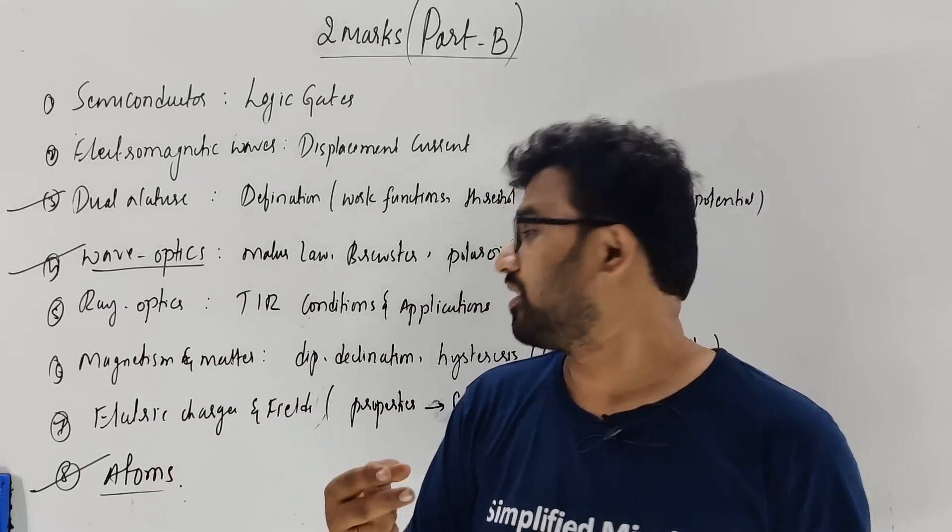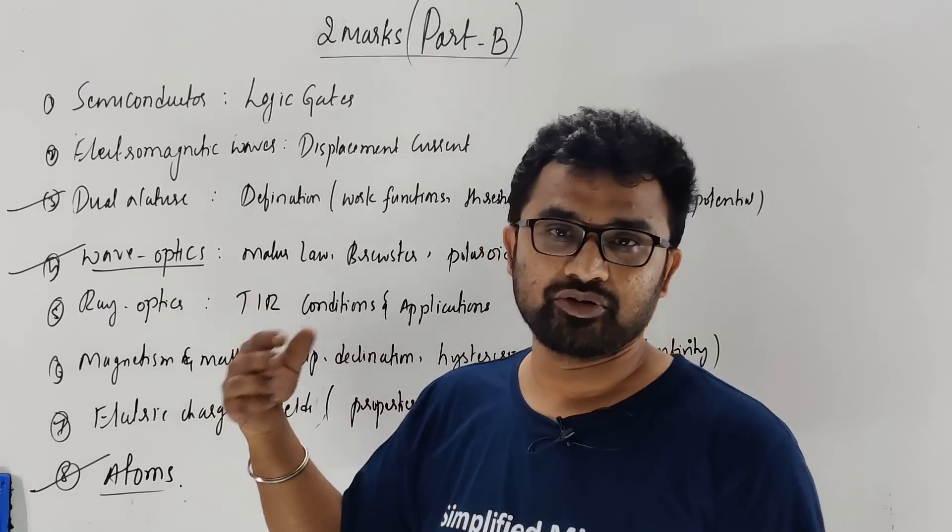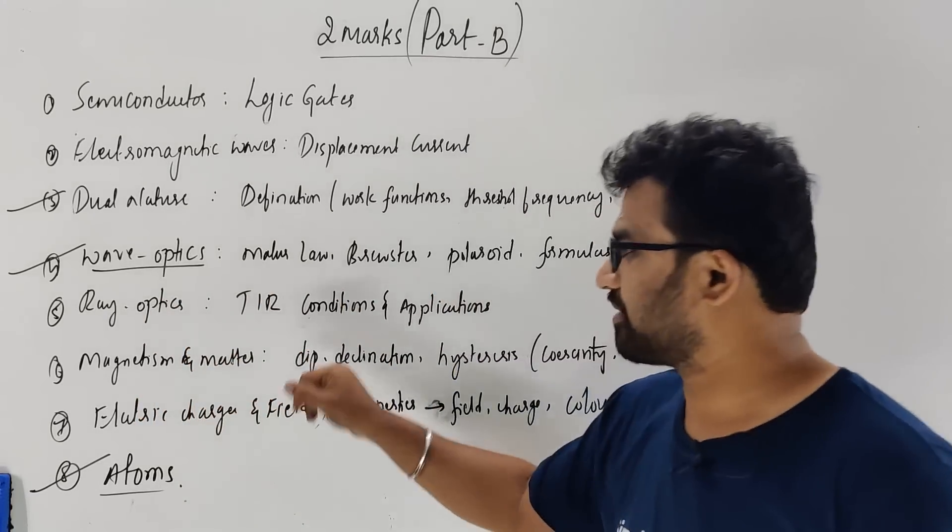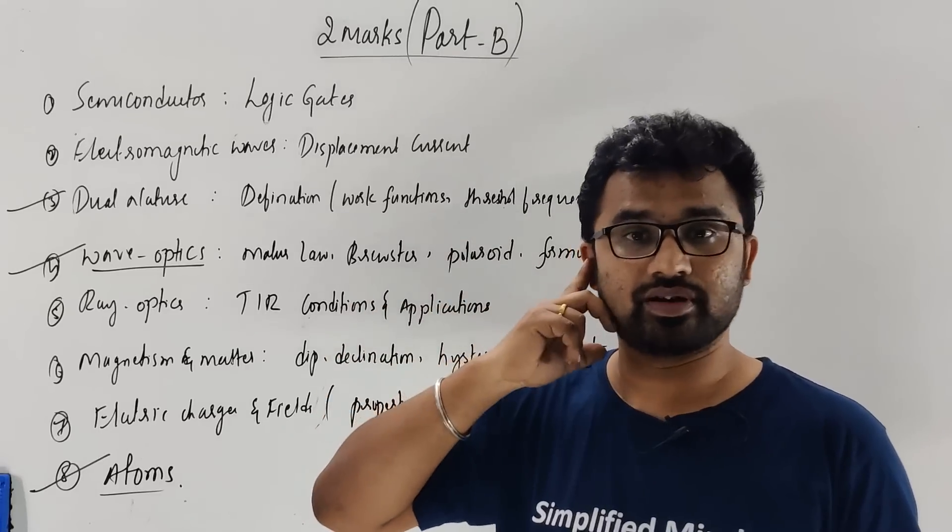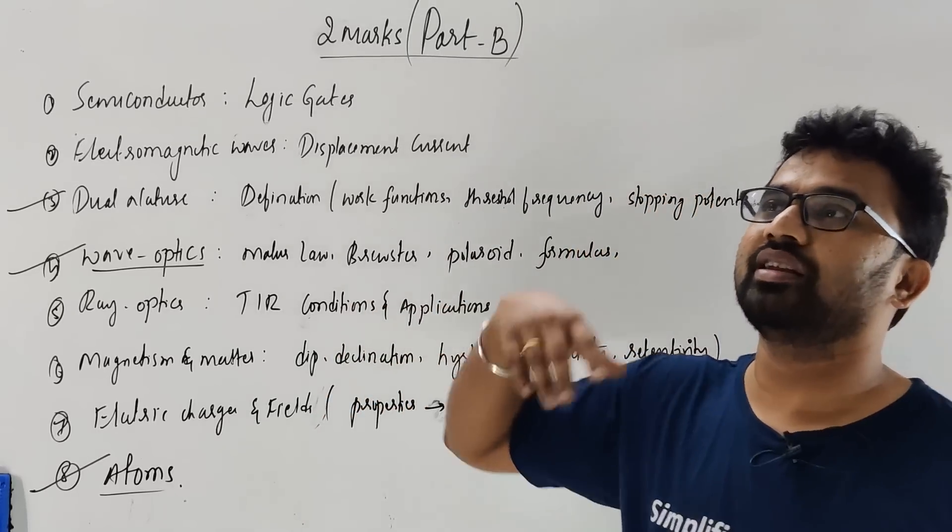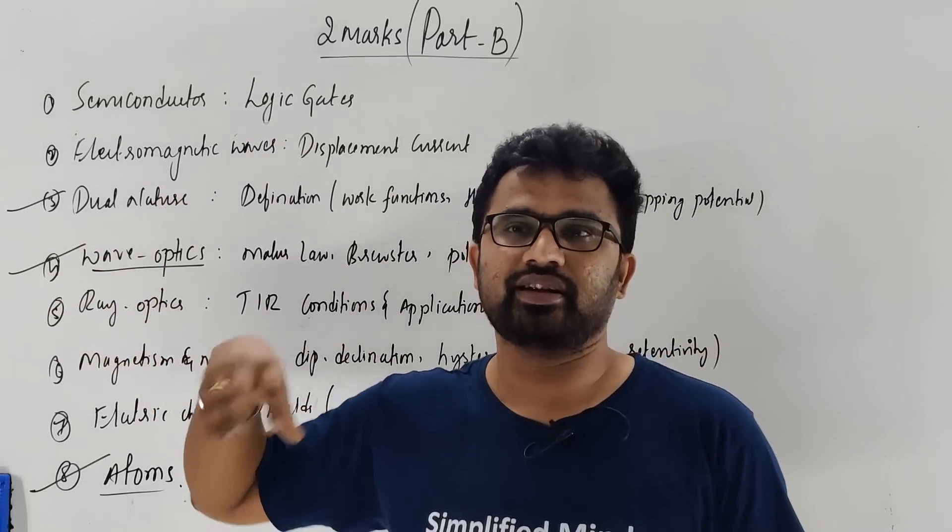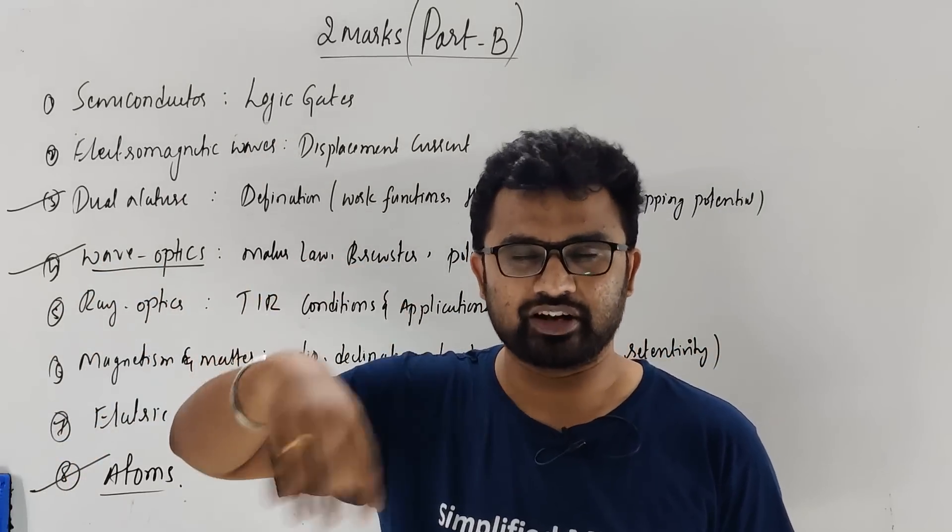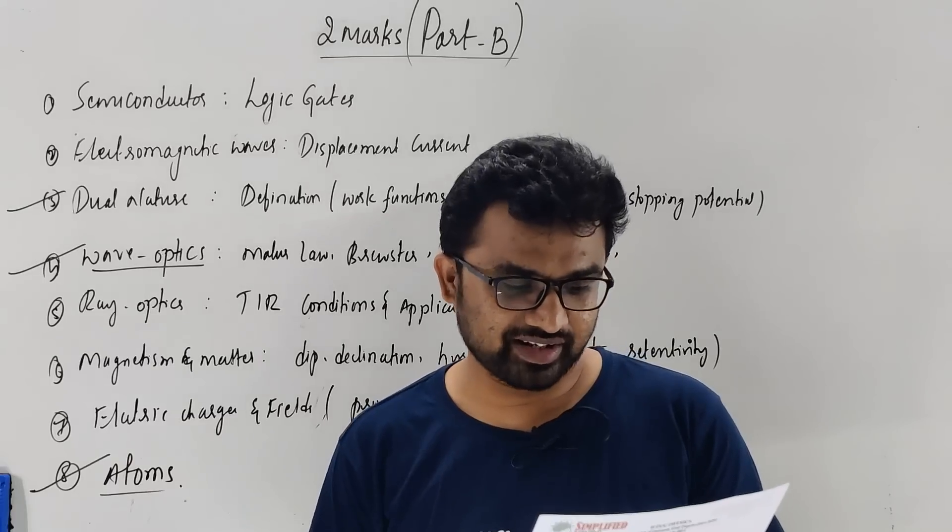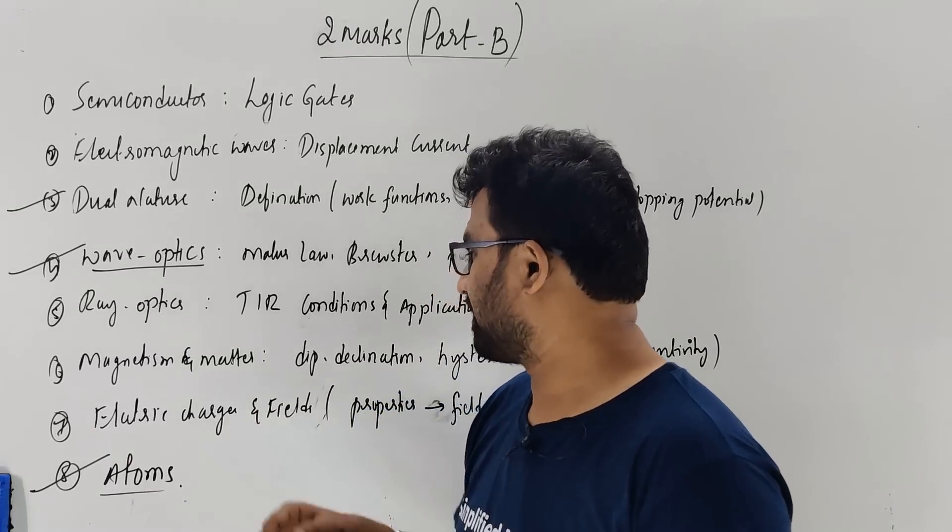Magnetism and matter—same thing we discussed even this for three marks. Dip, declination, neutral axis. Call. And all the properties—three marks, right? Properties of diamagnetic, properties of ferromagnetic. Dip, declination—they are defined. Other than that, it's easier.